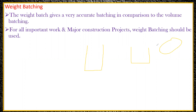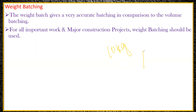The volume keeps on fluctuating in volumetric batching. But when we go for weight batching, let us say I have to take 10 kg of cement. When I say I want to take 10 kg of cement, I'll be taking 10 kg only with the help of a weighing balance. So 10 kg is 10 kg only — there won't be any fluctuation in that.